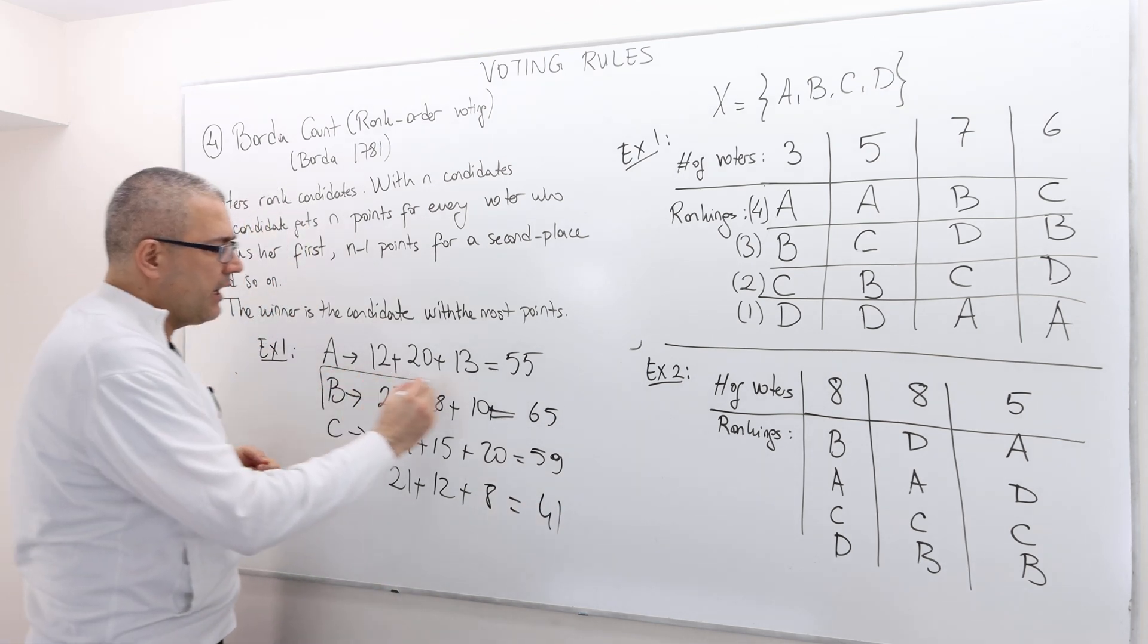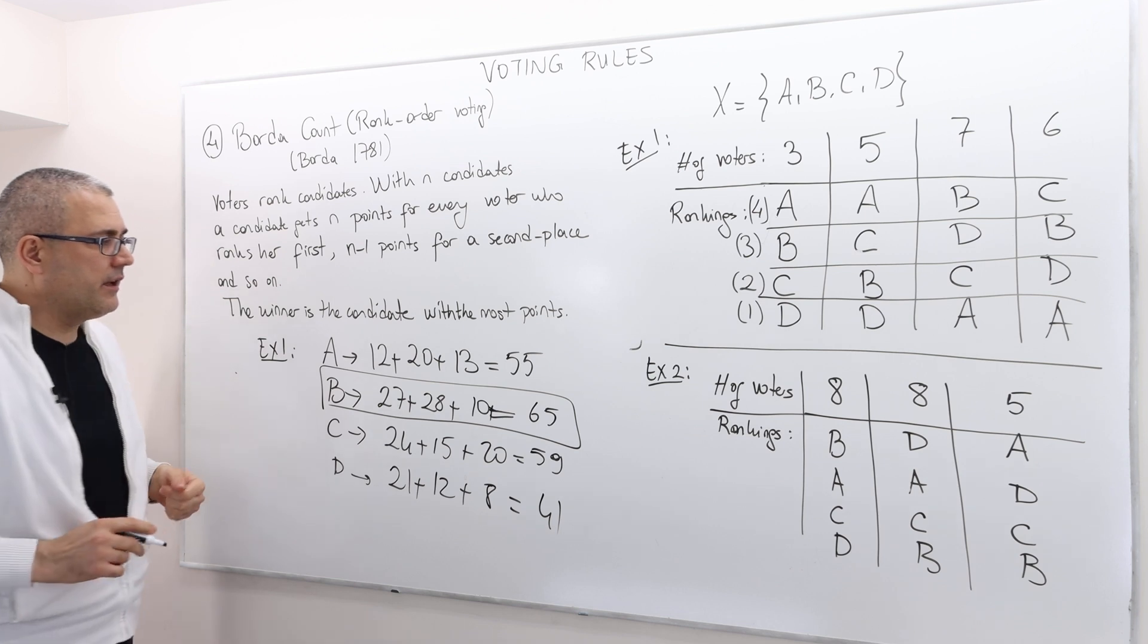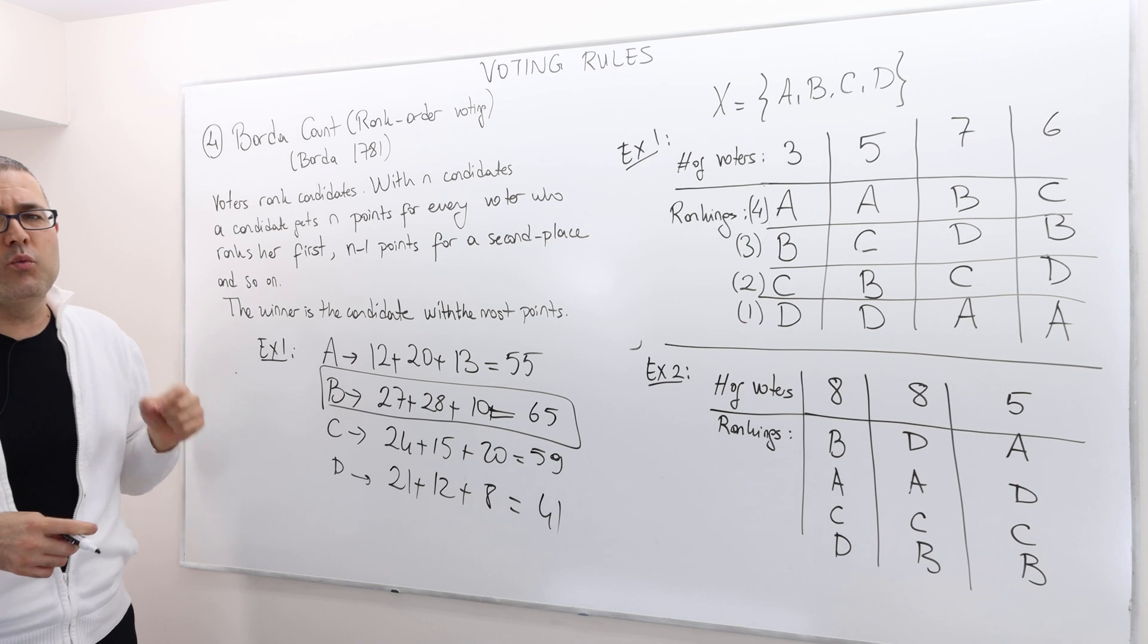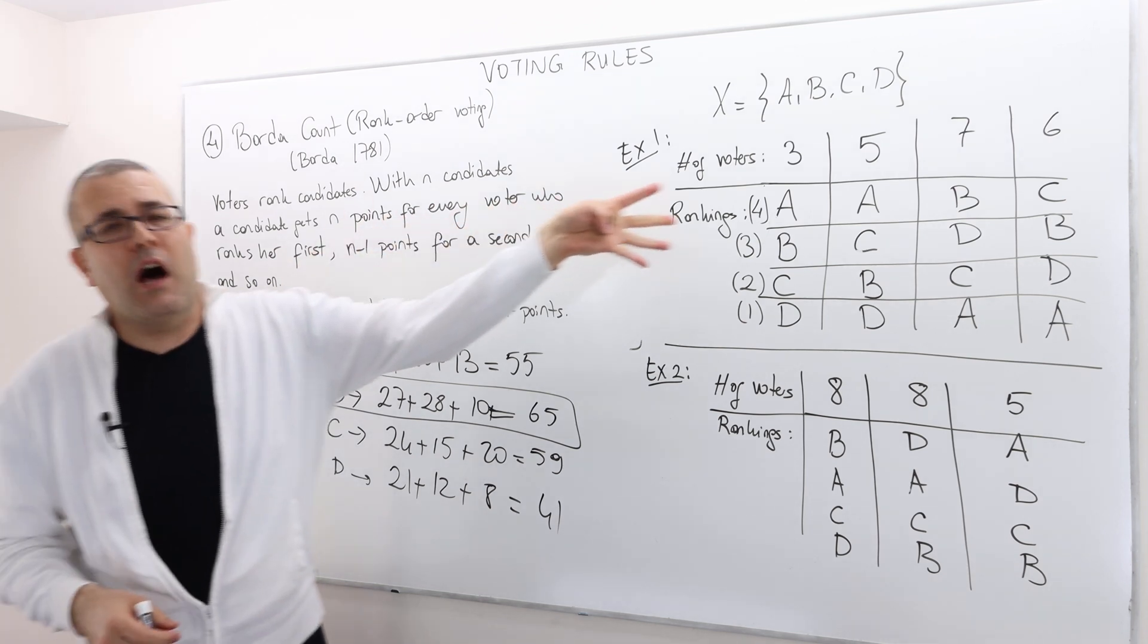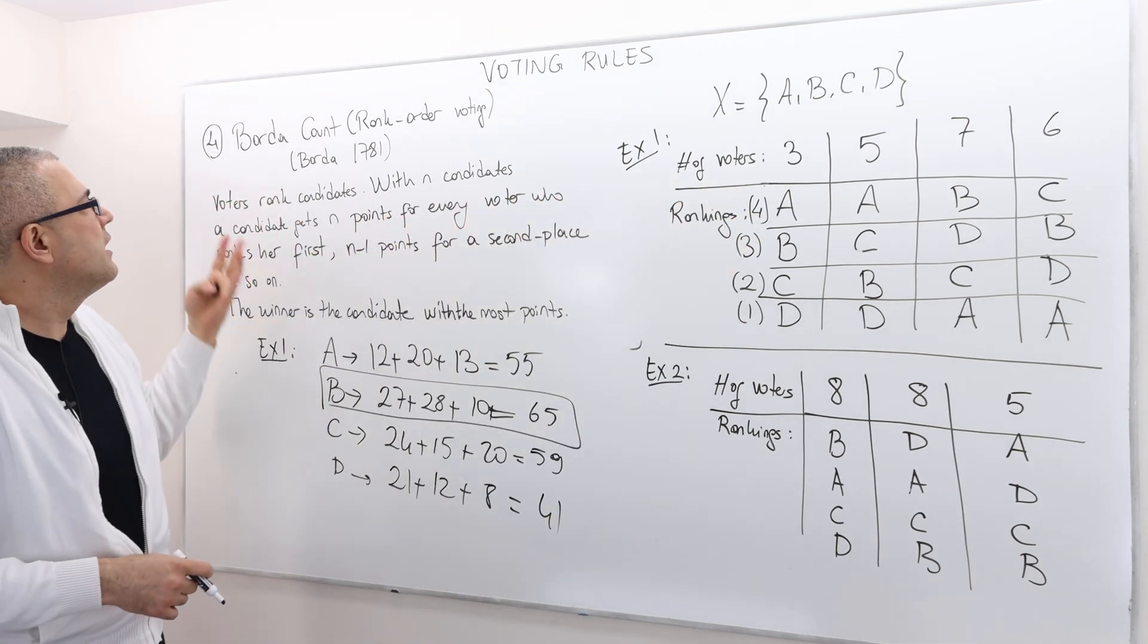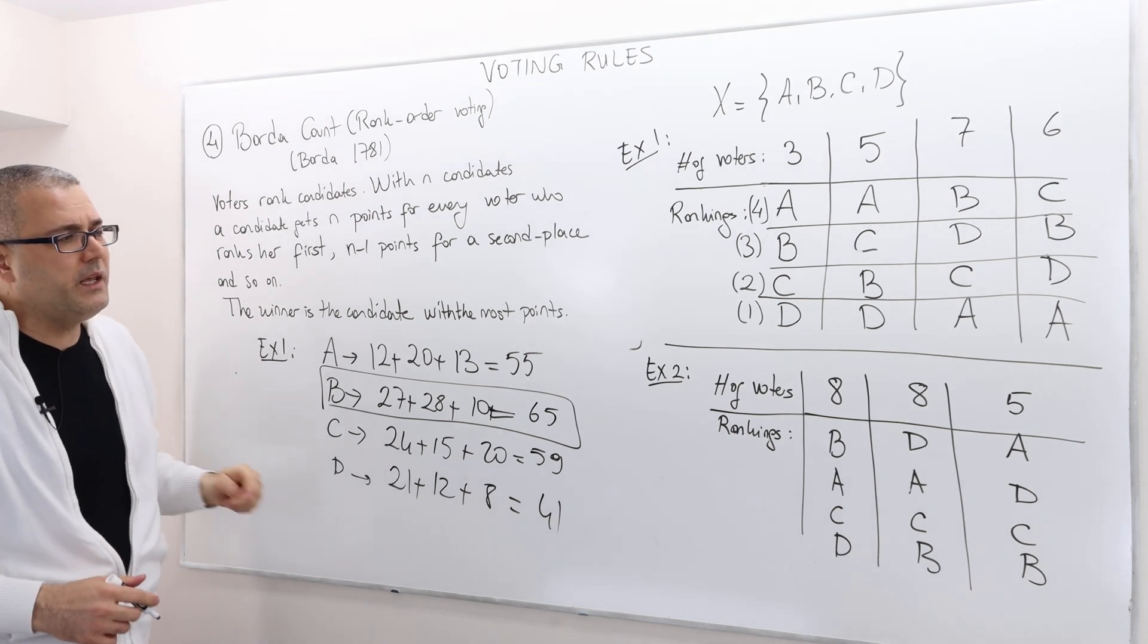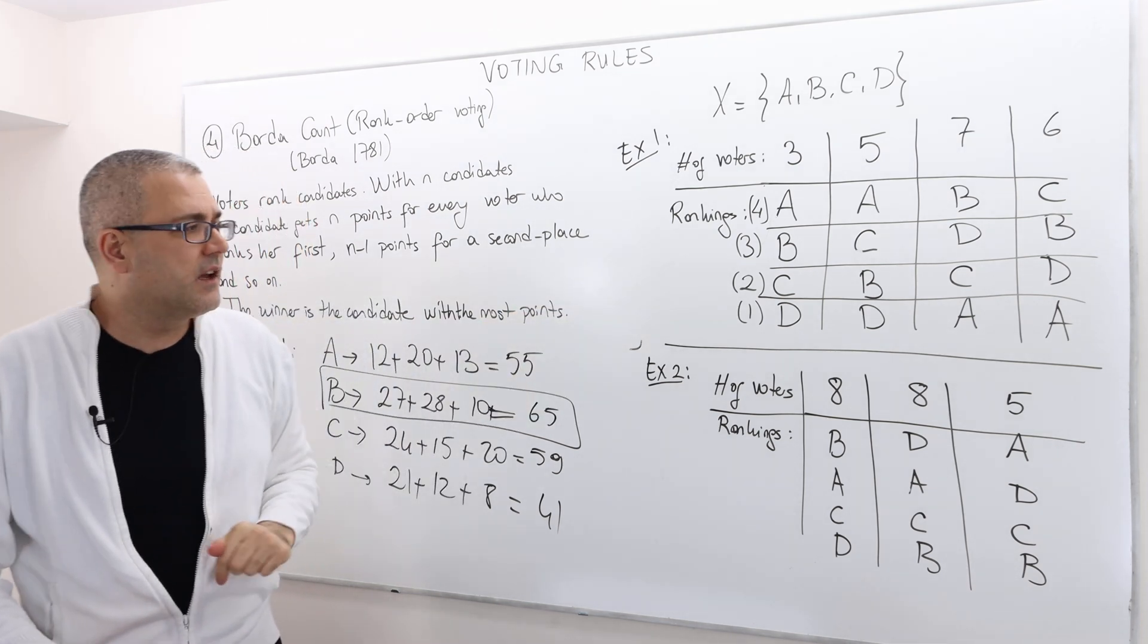Well, as you see, the highest points go to candidate B, and hence candidate B is the winner under this preference profile. So therefore Borda count is going to select alternative B in this case.